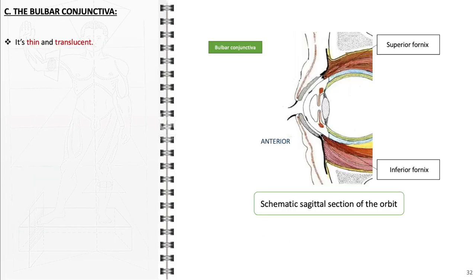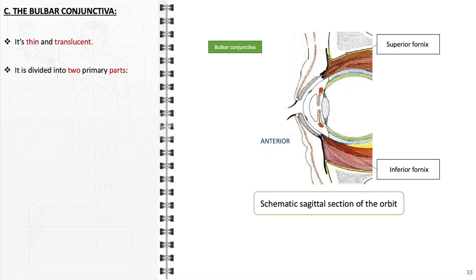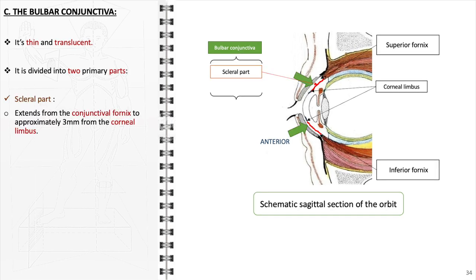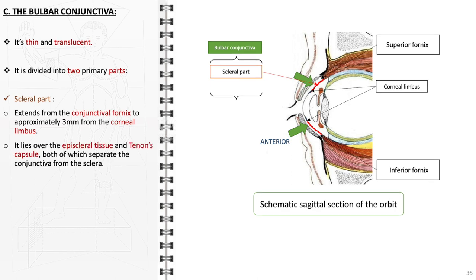The bulbar conjunctiva is thin and translucent, adhering to the underlying eye structures and is divided into two primary parts. The scleral part, spanning from the conjunctival fornix, stretches to within approximately 3 mm of the corneal limbus, forming a protective covering. It lies over the episcleral tissue and Tenon's capsule, both of which separate the conjunctiva from the sclera. These layers provide structural support and facilitate movement of the eye within the orbit.